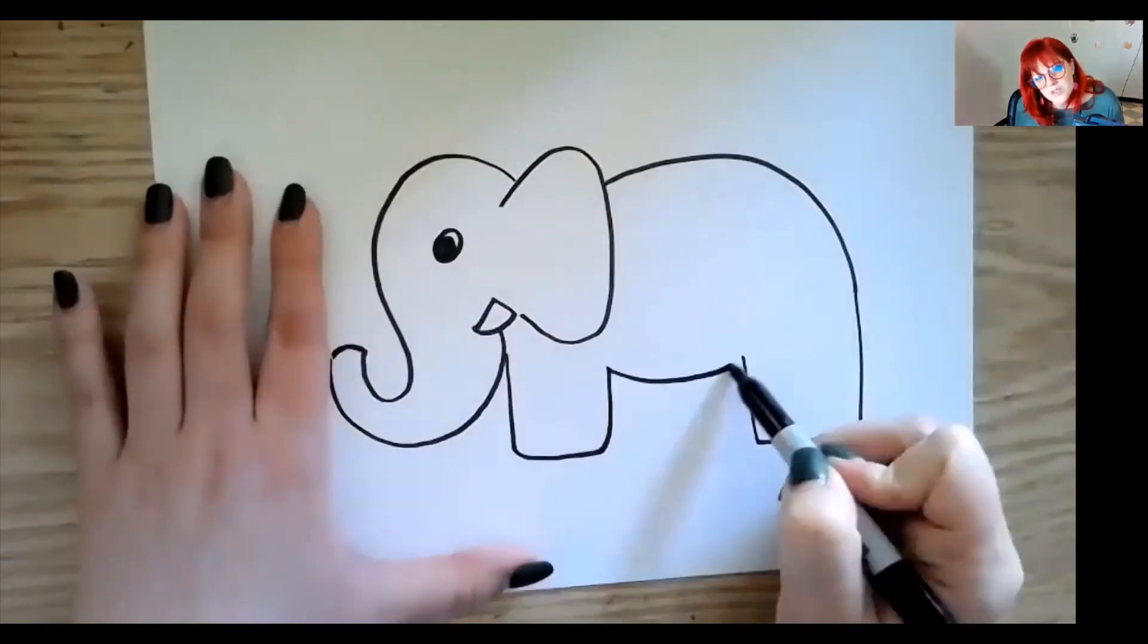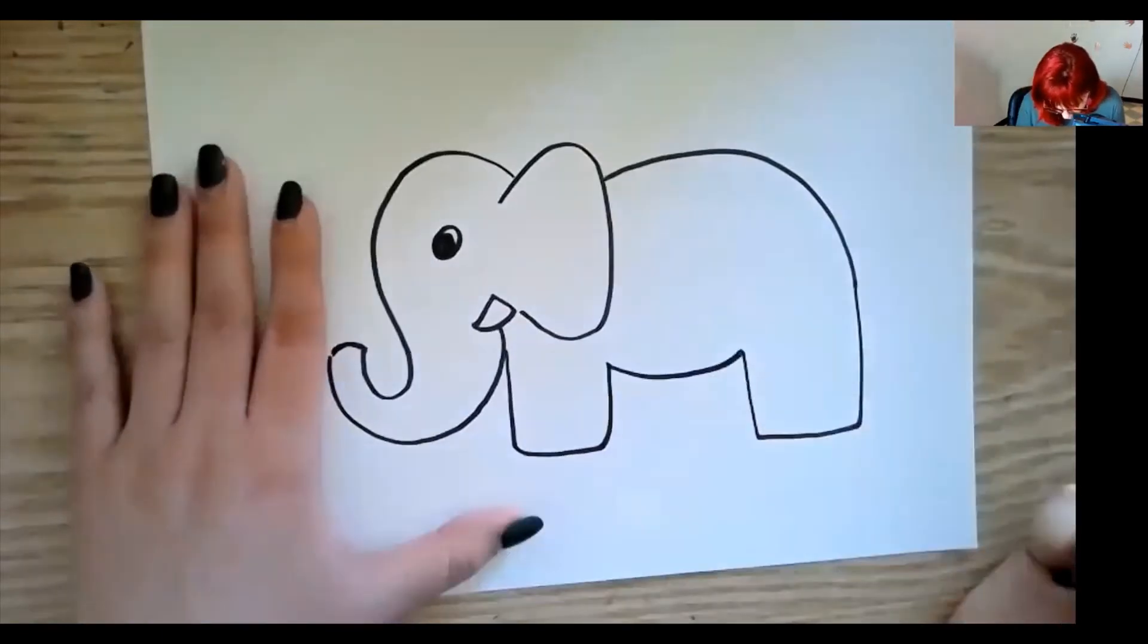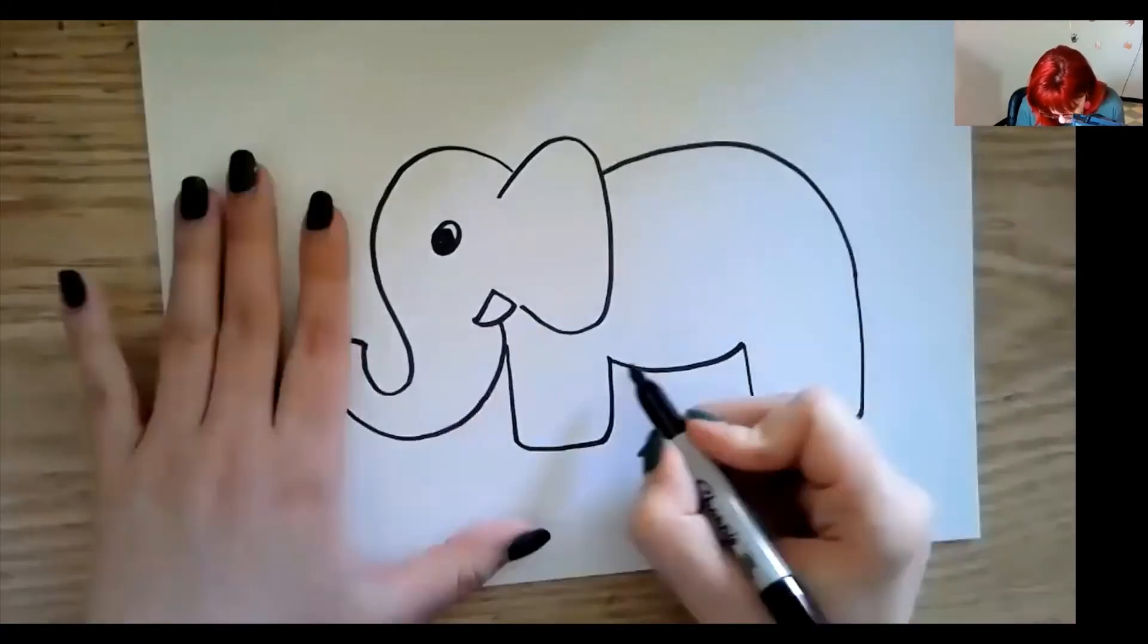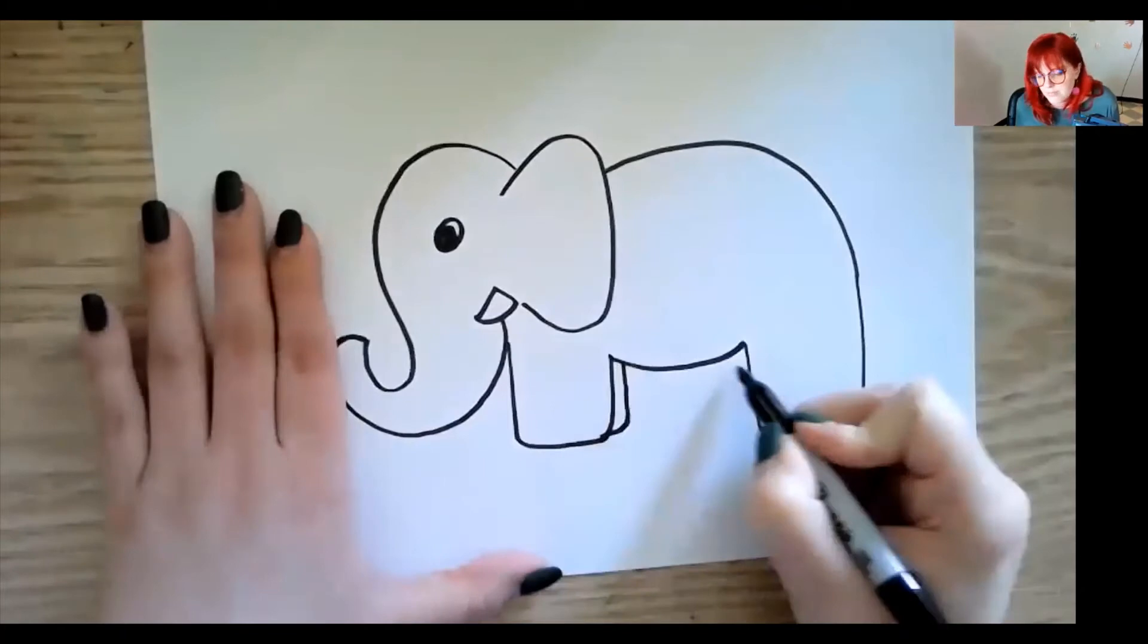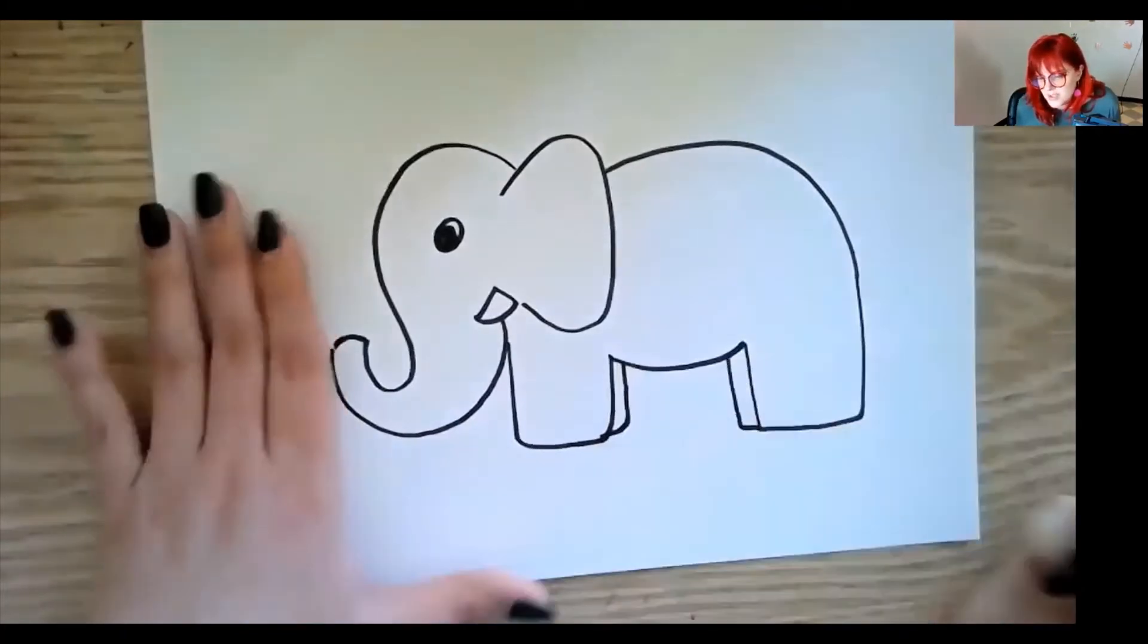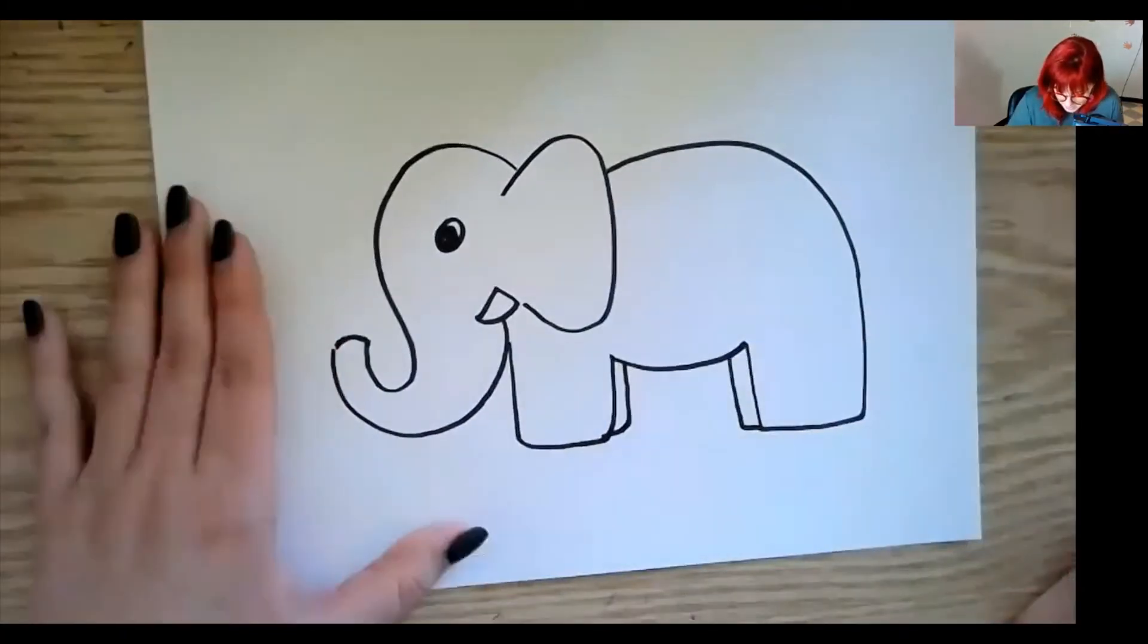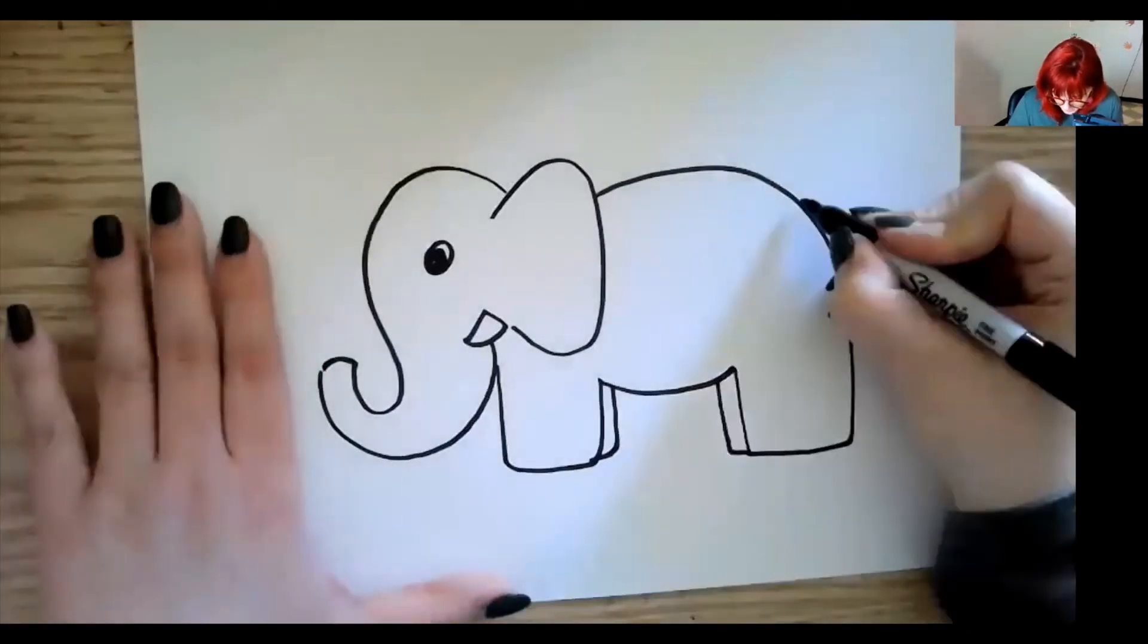And if you want to show that there's legs behind to show he has four legs, you can do a little line there, line there. Elephants do have a tail, so I'm going to add a little tail coming out the back.